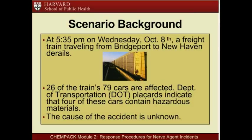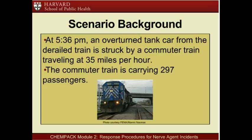Scenario Background: At 5:35 p.m. on Wednesday, October 8th, a freight train traveling from Bridgeport to New Haven derails. 26 of the train's 79 cars are affected. Department of Transportation placards indicate that four of these cars contain hazardous materials. The cause of the accident is unknown. At 5:36 p.m., an overturned tank car from the derailed train is struck by a commuter train traveling at 35 miles per hour. The commuter train is carrying 297 passengers.